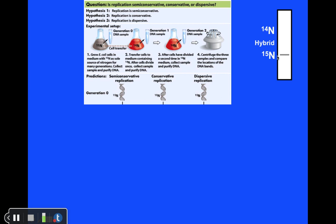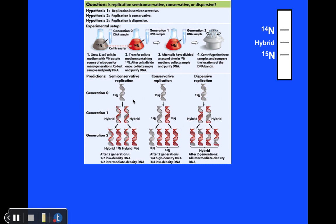They then transferred bacteria from N15 into N14 medium, let them divide for a few generations, and removed samples at each time point. They could make predictions based on each of the three hypotheses. Initially, all bacteria produced a band at the N15 mark—the same for all three hypotheses since all start from the same point. Then, after one round of cell division and another round in N14, different predictions could be made.